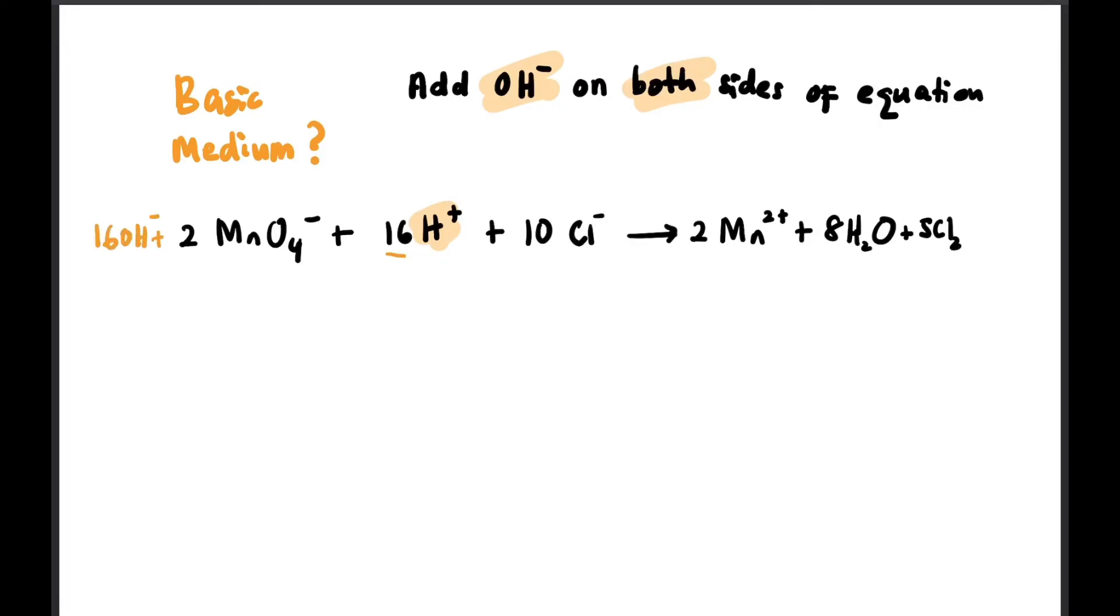On the left side, 16 OH⁻. On the right side, 16 OH⁻. And then we settle it. OH⁻ plus H⁺ becomes H₂O. So we have 16 H₂O, because H⁺ plus OH⁻ gives H₂O. If 1 plus 1 gives 1 H₂O, then 16 plus 16 gives 16 H₂O. Remember that.